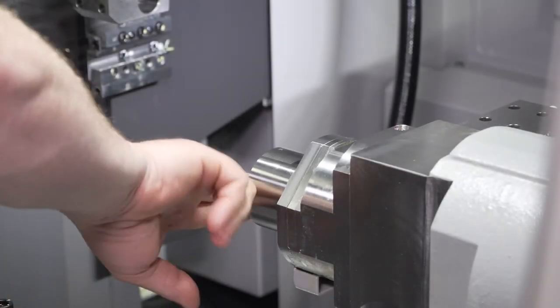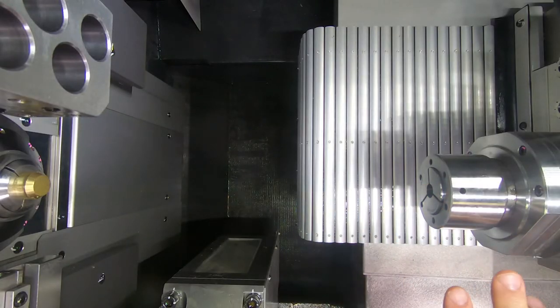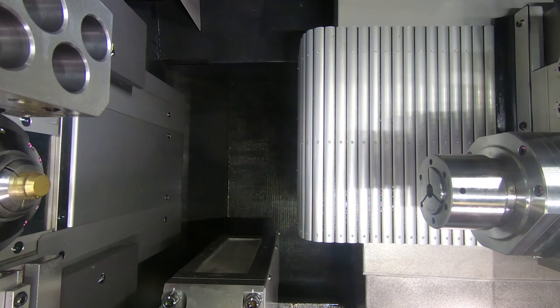In order to get the collet out on the sub-spindle, to clean out the chips and any kind of debris inside that gets collected over time running production, or just to change out your collet to a new job or setup and clean out the sleeve and everything in between jobs, I'm going to go ahead and take this sub-spindle collet nut off.